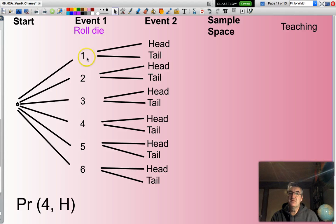I have six different outcomes here. They're all the different numbers on the die for the first event.